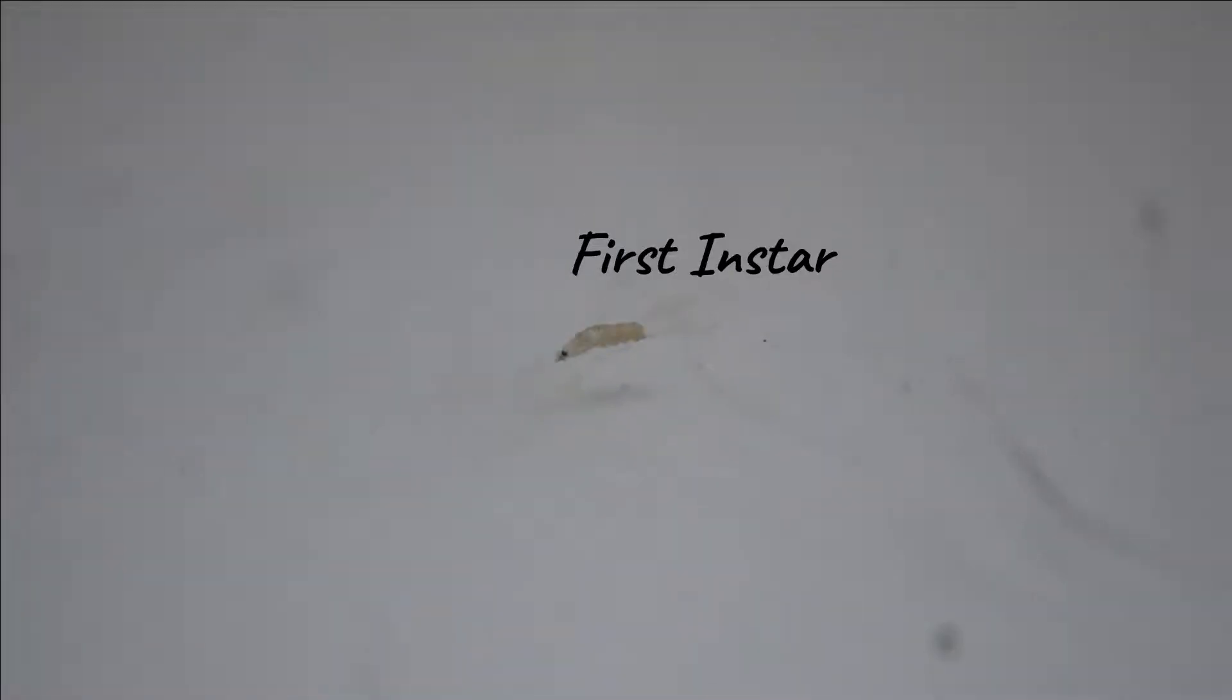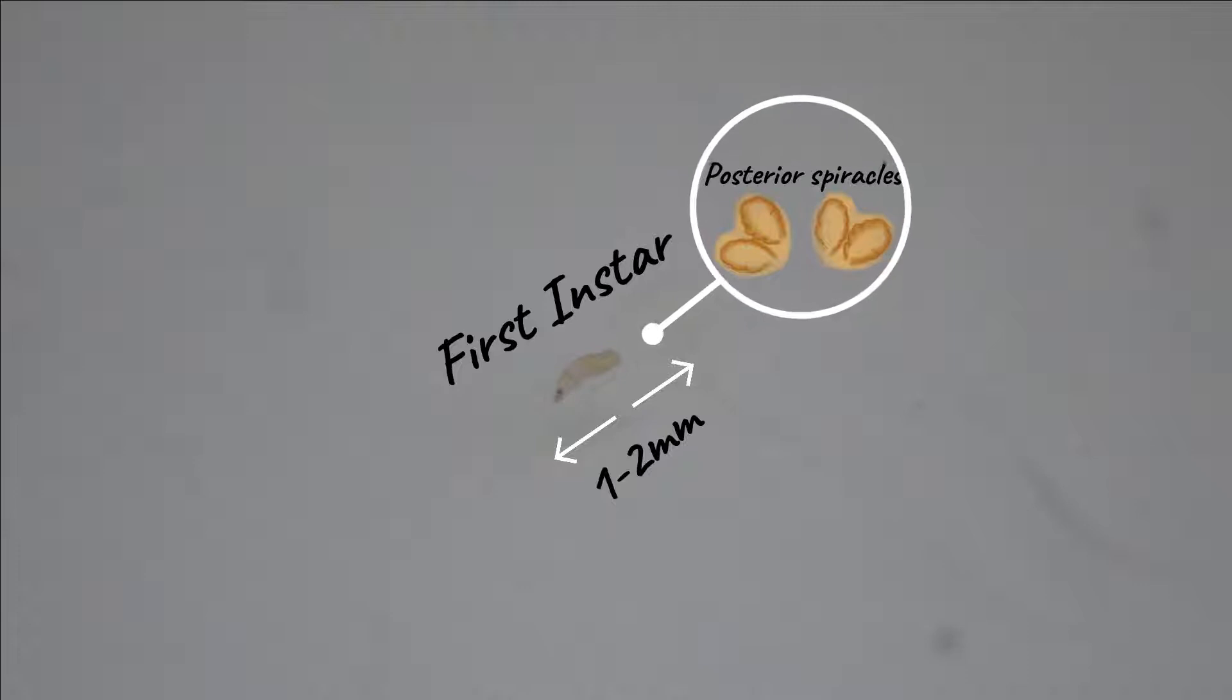Once these eggs hatched, they become the first instar larvae with a length of 1 to 2 millimeters with underdeveloped slits at their posterior spiracle. And they will spend approximately 19 hours as their first instar.